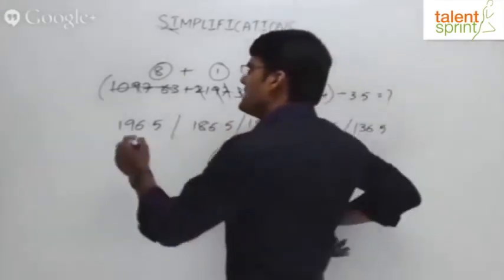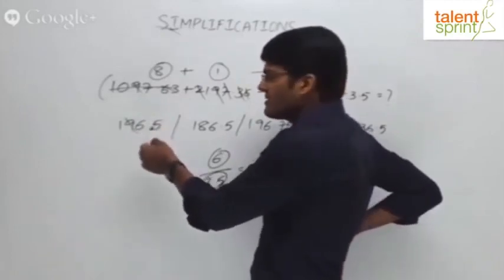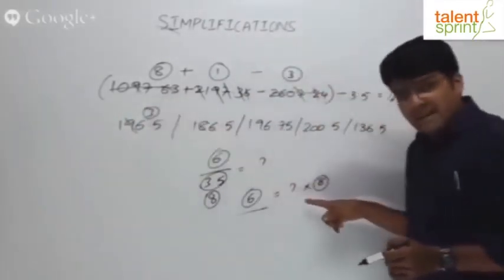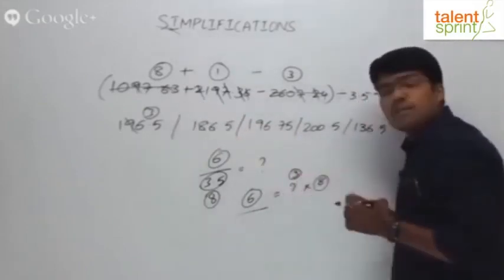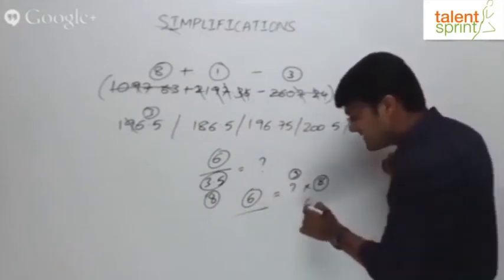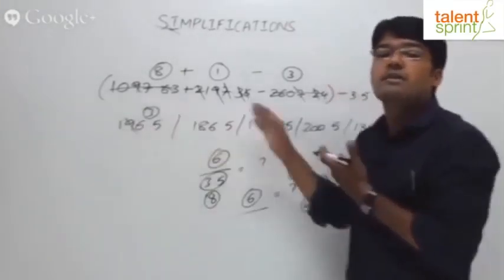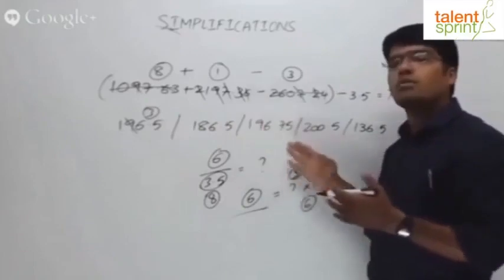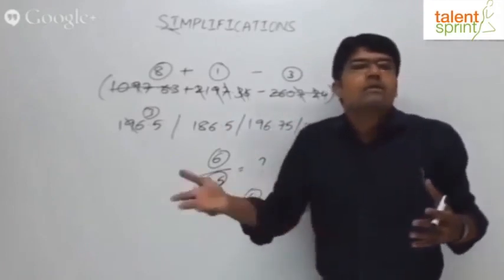For 196.5: root-digit is 1+6=7, 7+5=12, root-digit is 3. So 3 into 8 is 24, and 2 plus 4 is 6 — balanced. Maybe 196.5 is correct. For 186.5: 1 and 8 make 9, cancel. 6 and 5 is 11, root-digit is 2. Then 8 into 2 is 16, root-digit is 7. Not balanced — ruled out. Root-digit appears easy but can have multiple satisfying options, which is why unit-digit is preferred.